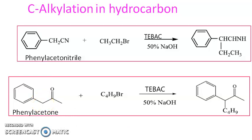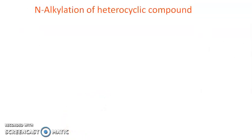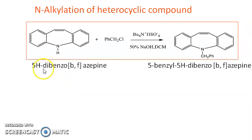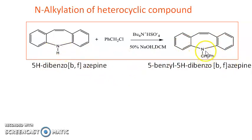The example for N-alkylation involves alkylating the nitrogen on a heterocyclic compound — 5H-dibenz[b,f]azepine. To this nitrogen you can introduce a phenylbenzyl group using tetrabutylammonium sulfate as the PTC, and the nitrogen is alkylated. You get 5-benzyl-5H-dibenz[b,f]azepine. So you are introducing a benzyl group onto the nitrogen — that is an example of N-alkylation.